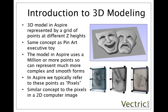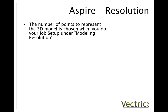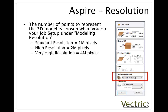The quality setting in the software is referred to as the resolution. You define this when you start a new job under the job setup. The section in the job setup form for modelling resolution is highlighted with the red rectangle you can see on the screen here. By default you're presented with three options: standard resolution means 1 million pixels, high resolution means your model is represented by 2 million pixels, and very high resolution means 4 million pixels over the surface of your entire work area.